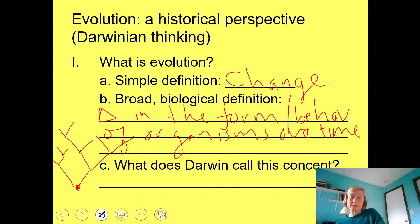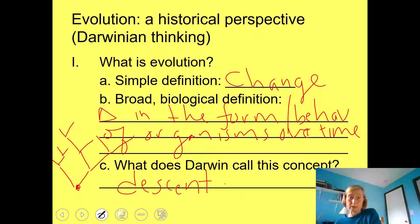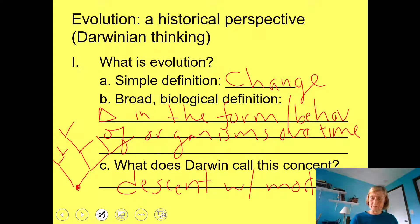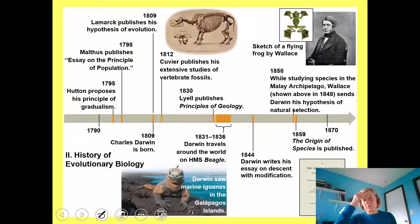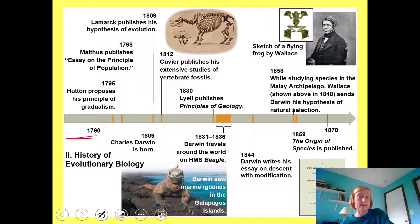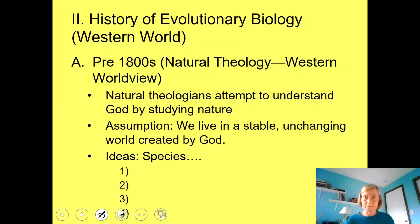Darwin called this concept descent with modification — he actually didn't even use the word evolution more than once in his first book. We need to know a little more about the history of our understanding of evolution to see where Darwin came from. This figure describes some important moments in evolutionary biology. The late 1700s to late 1800s is really the time when our theory of evolution developed. We'll talk about a few of those people from the Western world's perspective.